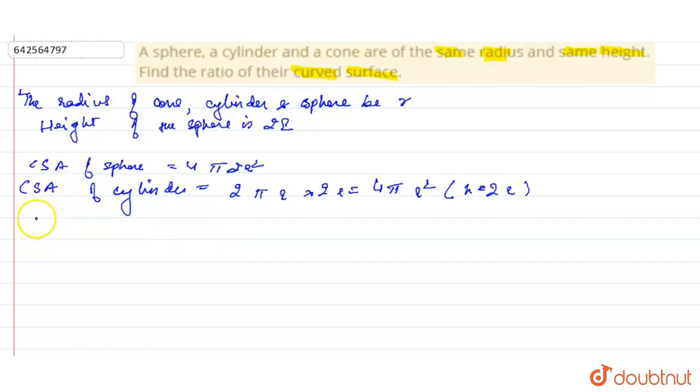And so now the curved surface area of cone is equal to πR. Right, now let's equate all this and we get πR√(R² + 4R²) = πR√(5R²) = πR²√5. Right, these are the curved surface areas.